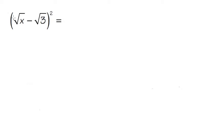Here we are going to multiply this out. We have the parentheses, square root of x minus square root of 3, raised to a second power. As we can see, we have a subtraction inside, therefore we cannot just take the power and distribute it into the parentheses.